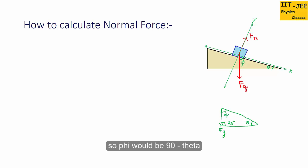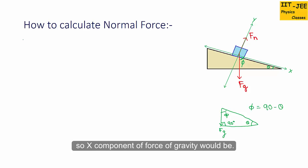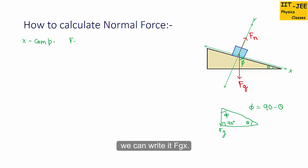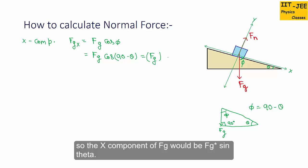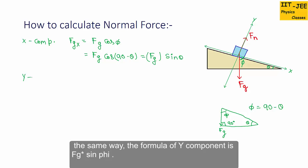This angle is 90 degrees, so phi would be 90 minus theta. The x-component of force of gravity would be fg·cos(phi), which gives us fg·cos(90 − theta). Since cos(90 − theta) equals sin(theta), the x-component of fg is fg·sin(theta).